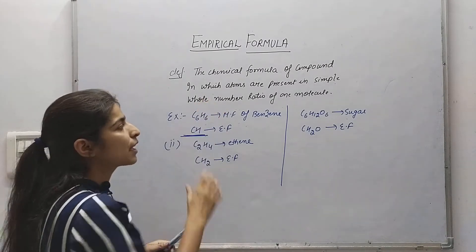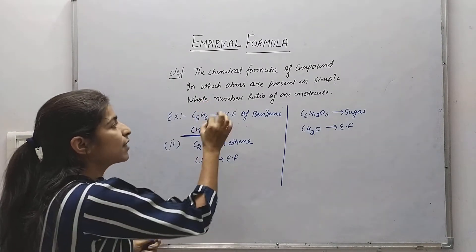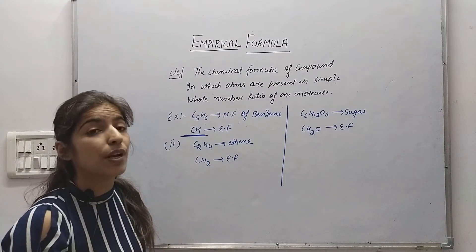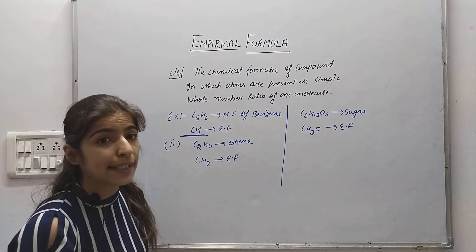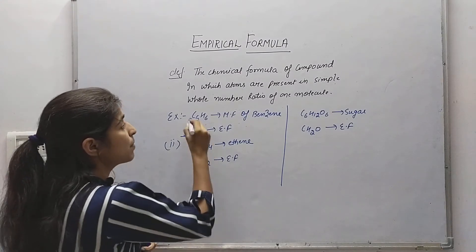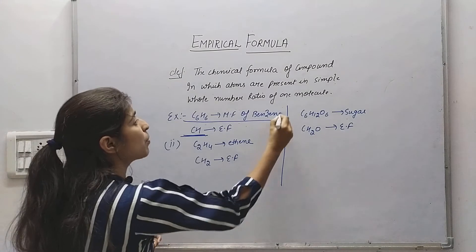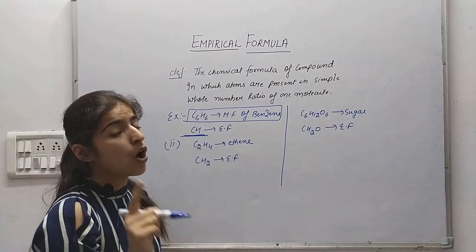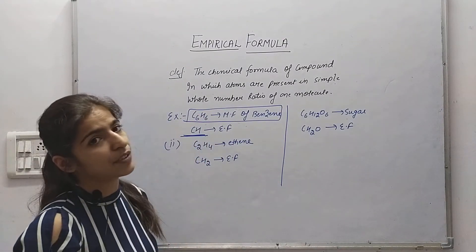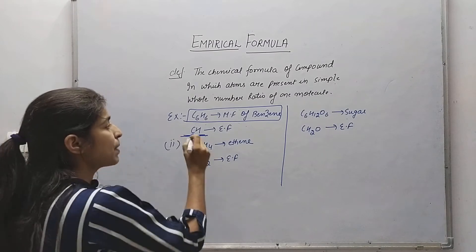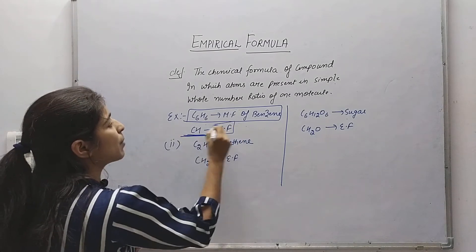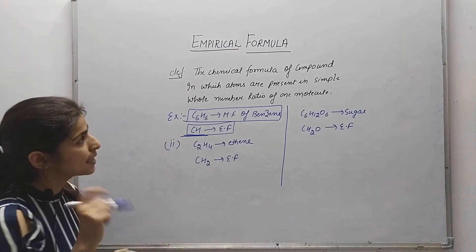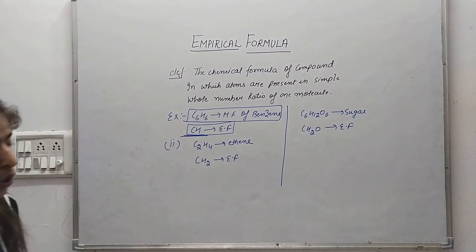What is the molecular formula? It represents the actual number of atoms present in a molecule. For benzene, the actual number of atoms is carbon 6 and hydrogen 6. But what is the simplest formula? We have CH — the simplest whole number ratio.